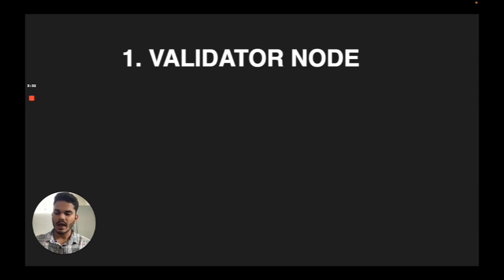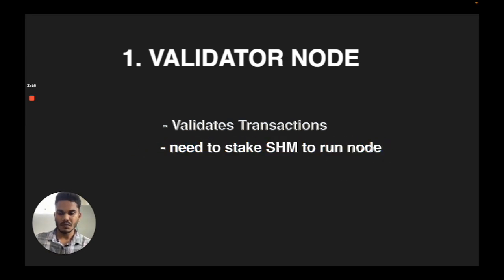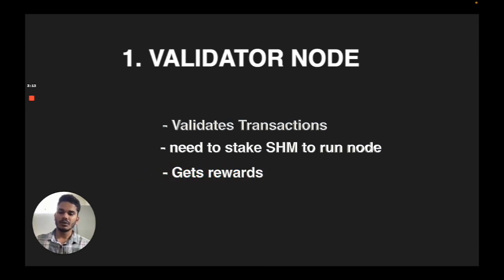The first one is validator nodes. A validator node actually validates the transactions in the network and is part of the consensus of the network as well. To run a validator node, you need to stake SHM tokens, and the validator node will get some rewards for validating transactions.